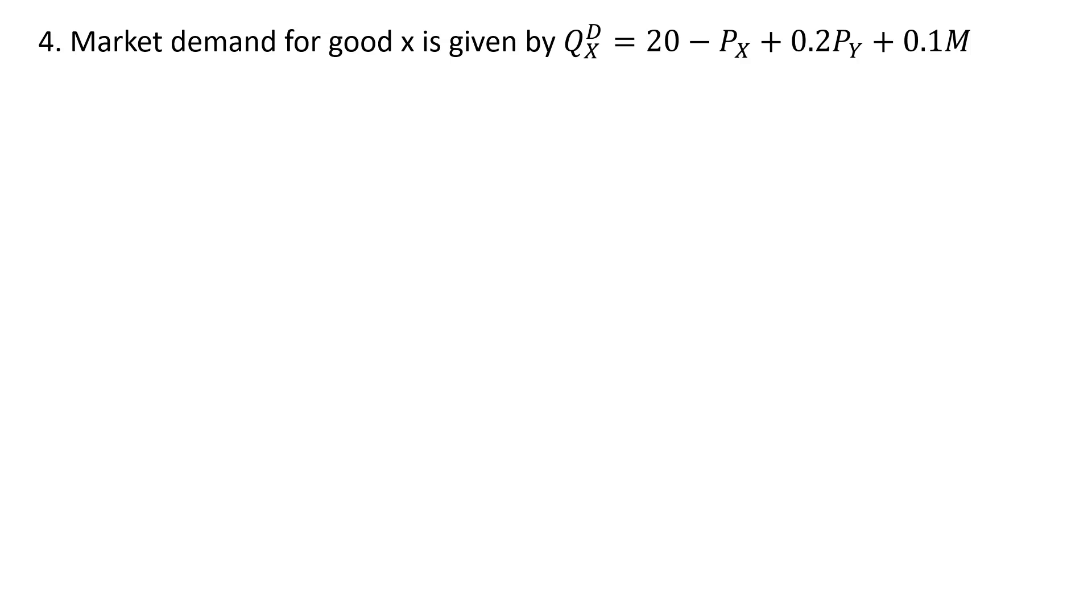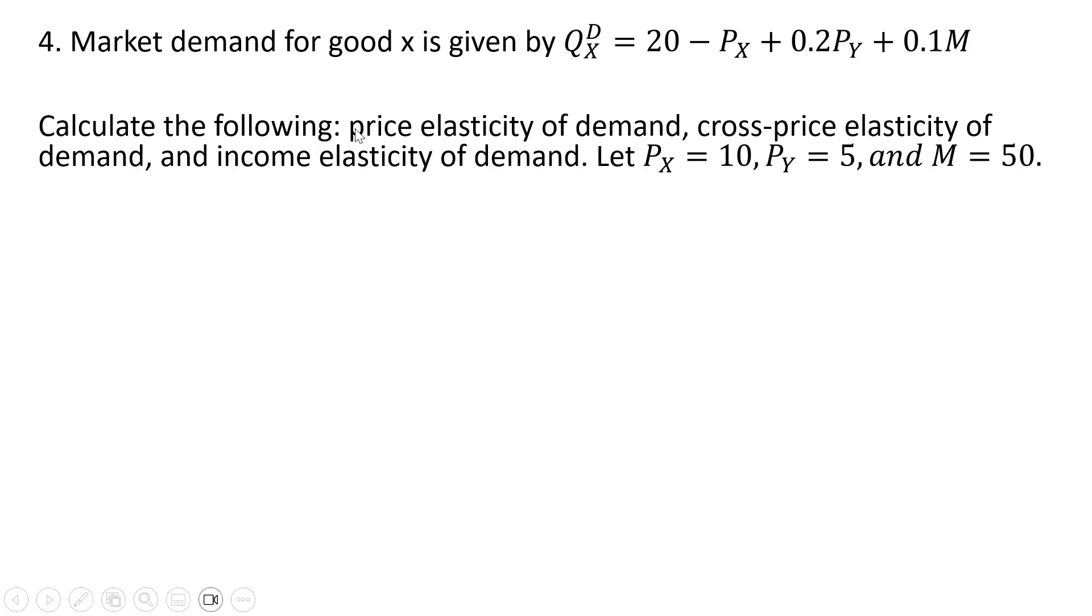Question four. Market demand for good X is given by the following. We want to calculate the following: the price elasticity of demand, the cross price elasticity of demand, and income elasticity of demand. We're going to let the price of good X equal $10, the price of the related good equal $5, and the consumer's income here in the market is going to be 50. Making all our substitutions into the demand for good X, all of these prices, we see that the quantity demanded here at these values is 16 units.